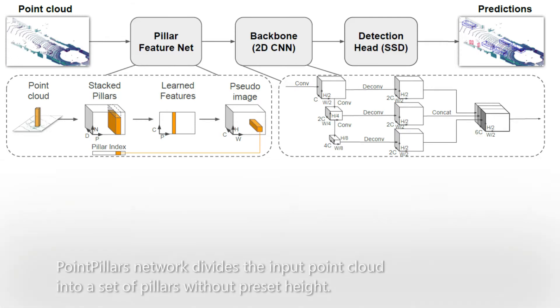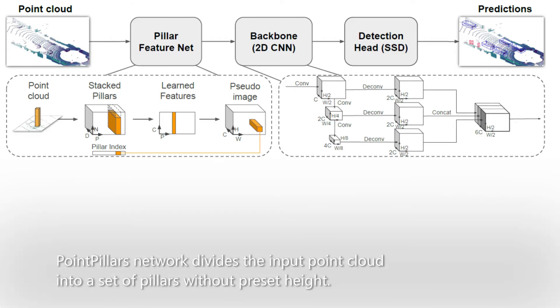Before the Pillar FeatureNet, the input point cloud needs to be divided into a set of pillars with no preset height.